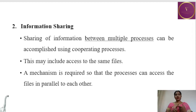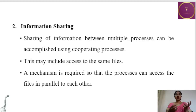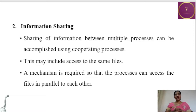Multiple processes can share information, with many processes accessing information from the same file. This may include access to the same file, and a mechanism is required so that processes can access the file in parallel, so that both processes can access the same file. This is also one of the reasons for cooperating processes.